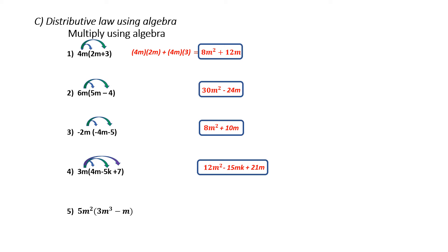Number 5 deals with higher value exponents. What you may not have learned yet is that when we multiply the same bases with exponents, we add the exponents. So when I go 5m squared times 3m cubed, 5 times 3 is 15, and m squared times m cubed — we add the exponents — giving us 15m to the fifth. Now the second term: 5m squared times negative m. The number in front of m is really negative 1, so 5 times negative 1 is negative 5. m squared times m — even though it doesn't state it, there is an exponent of 1 on that m — so when we add them, we get negative 5m cubed. These are not like terms, so that's my final answer.